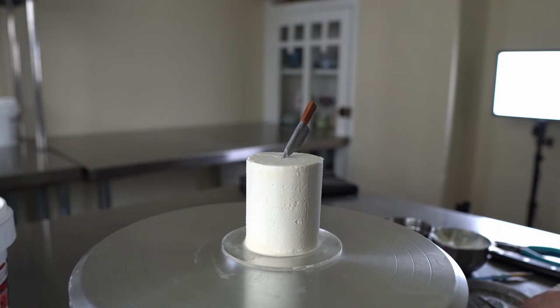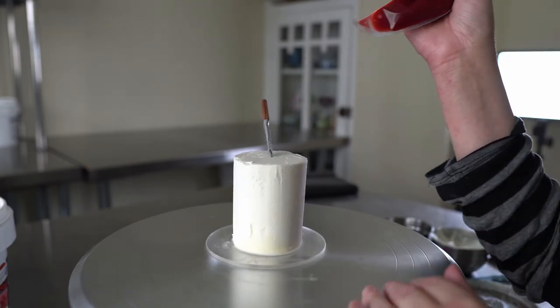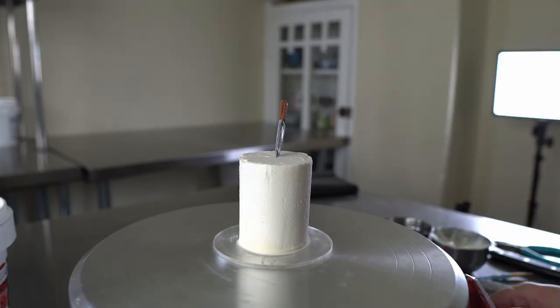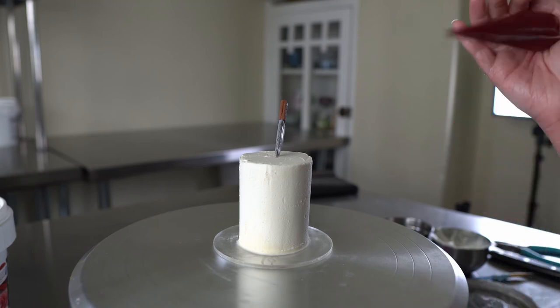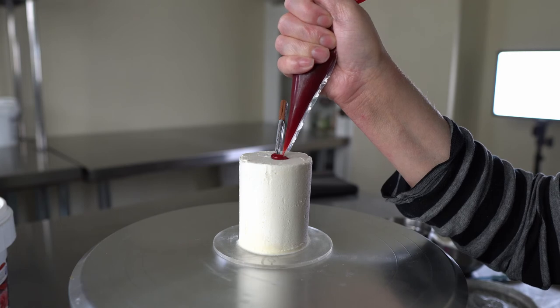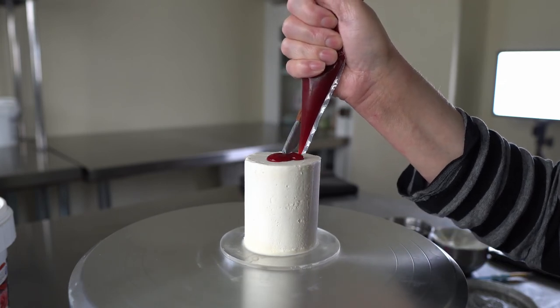Then I'm going to take a little bit of my raspberry sauce. I just got it loaded up into a disposable piping bag. I just want to cut a little opening. There we go, because I want to flood the top of the cake.